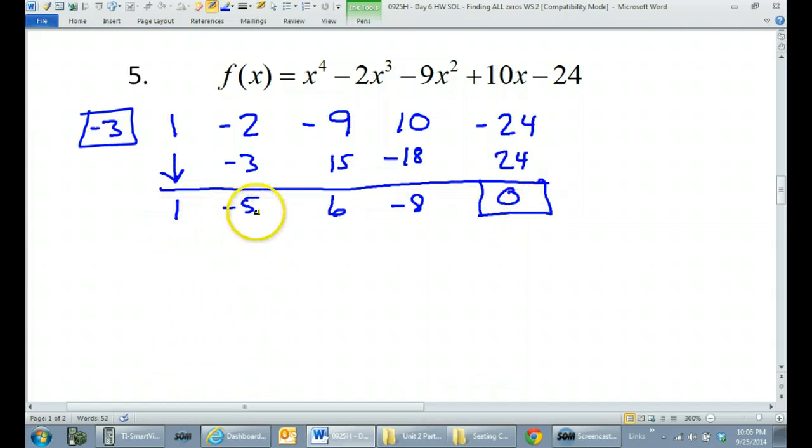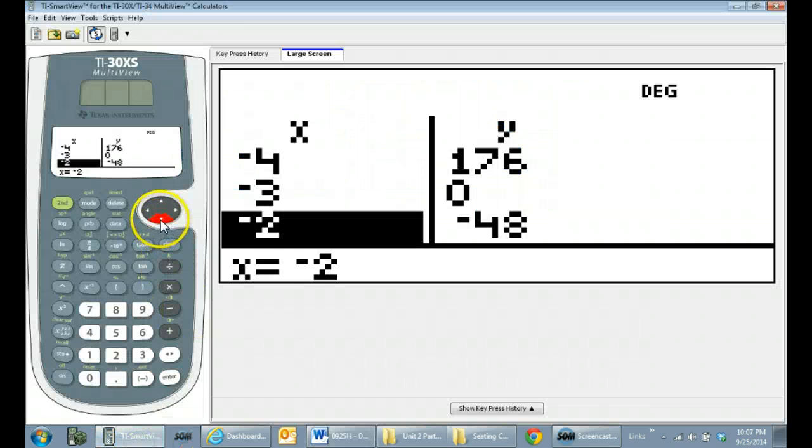Now I'm looking at these four coefficients, and if I saw a pattern like 1, 5, 1, 5, or 1, 5, 2, 10, something like that, I would think grouping would be possible. But I don't see any pattern among these coefficients. So I'm going to look for another zero on my calculator.